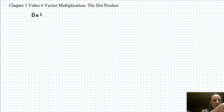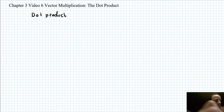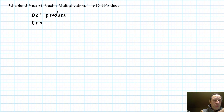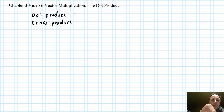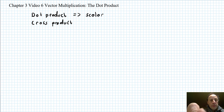You have the dot product and you have the cross product. The dot product gives you a scalar result, while the cross product gives you a vector result.